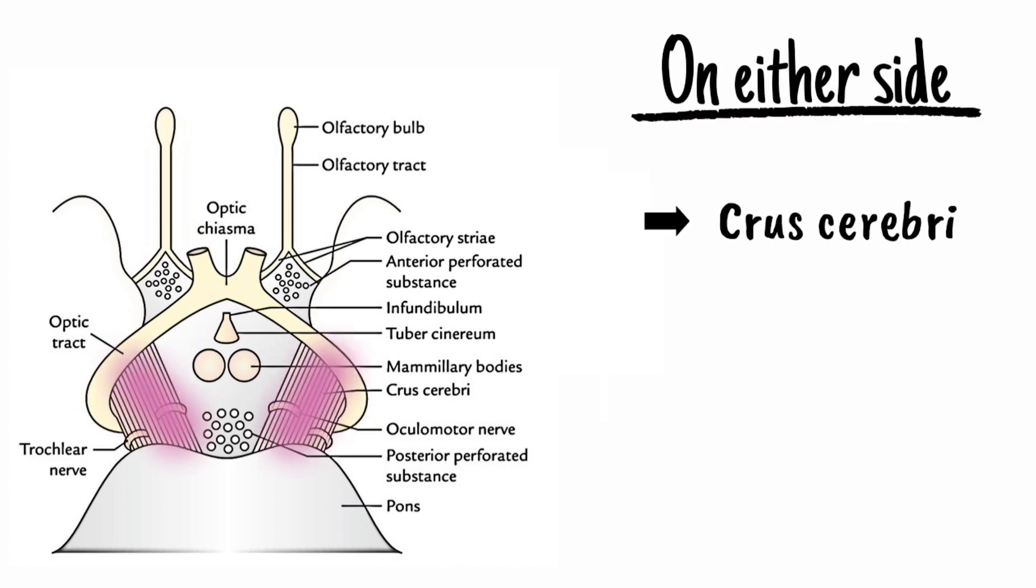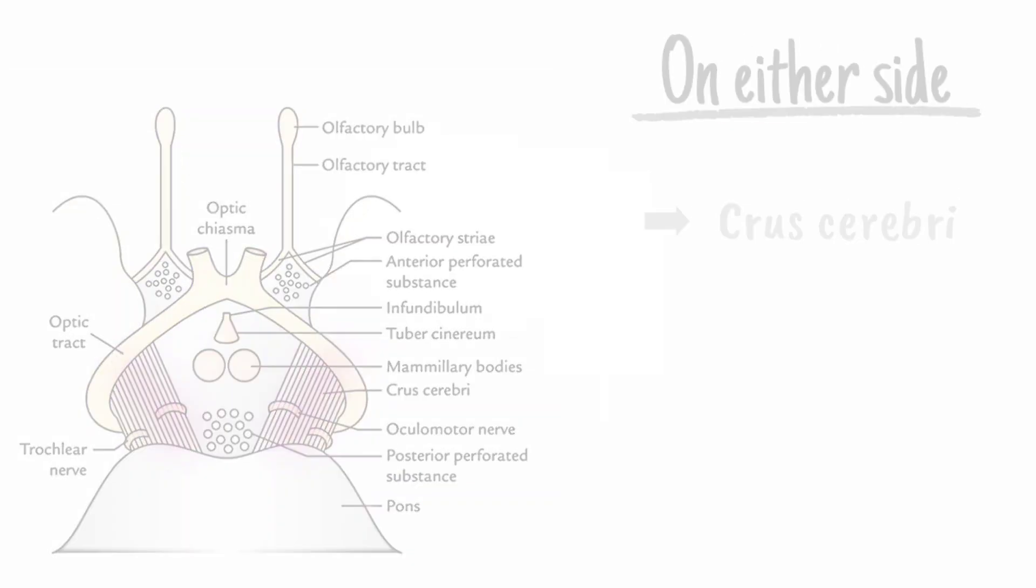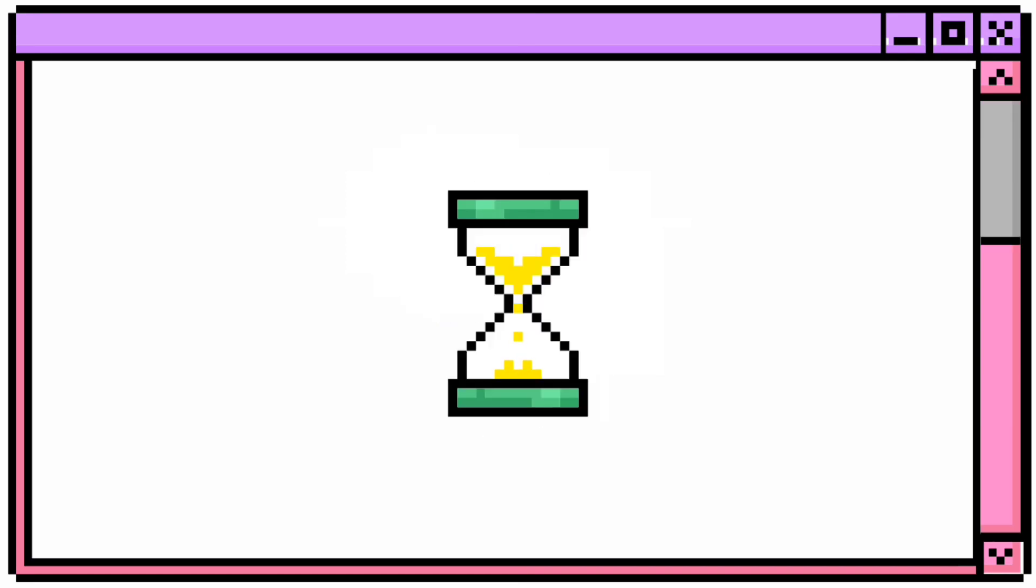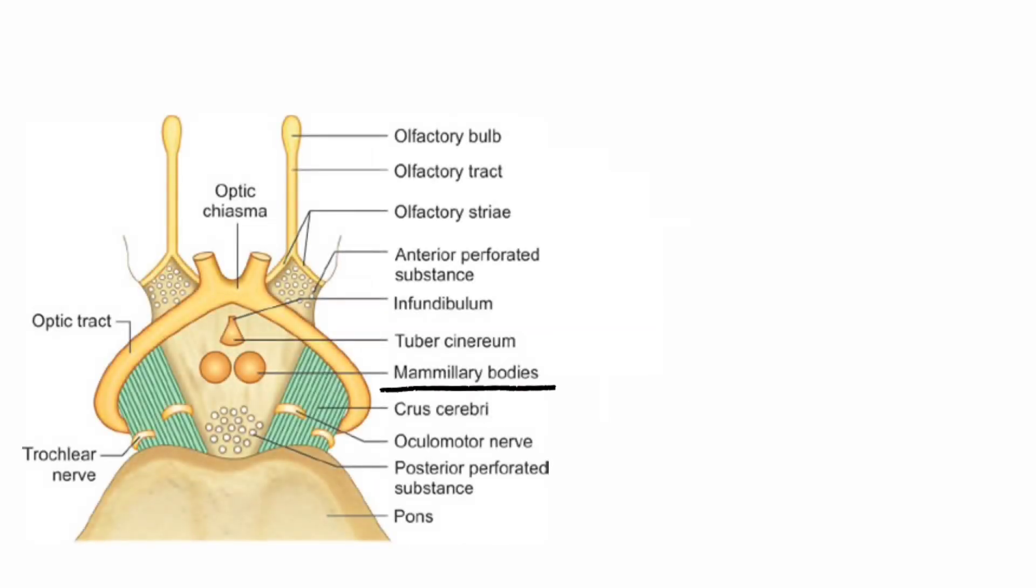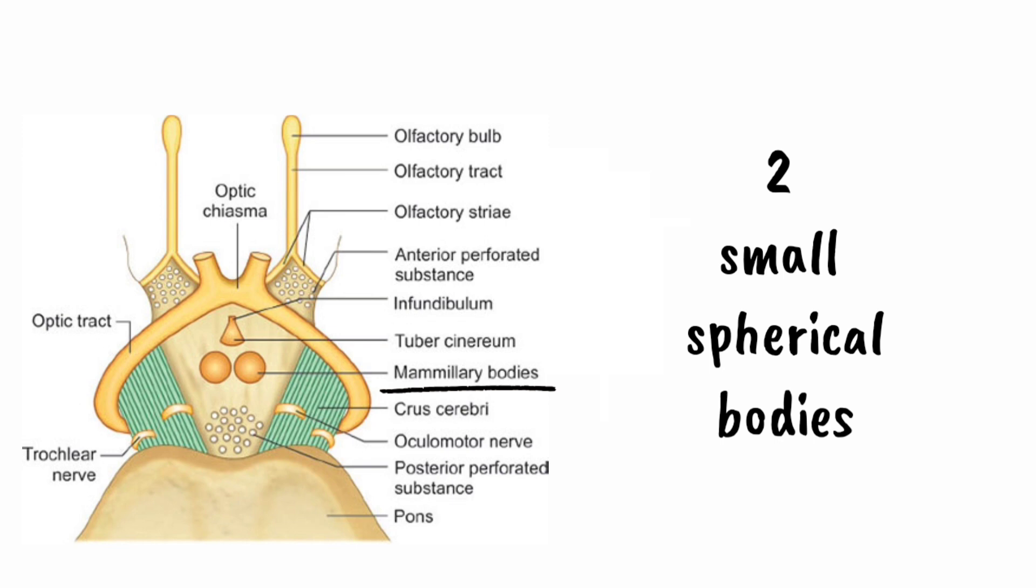And the next is contents of Interpeduncular Fossa. There are 5 contents. First is mammillary bodies. They are 2 small spherical bodies present in Interpeduncular Fossa. And the second is tuber cinereum.